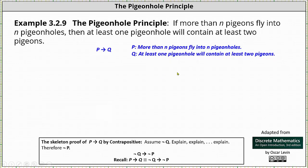We will use the proof method of proof by contrapositive to now prove the pigeonhole principle. Recall the skeleton proof of if P then Q by contrapositive is to assume not Q,